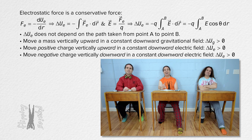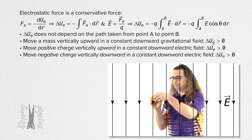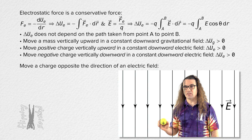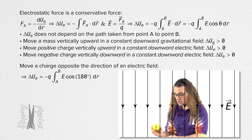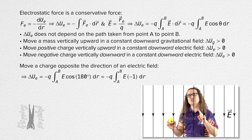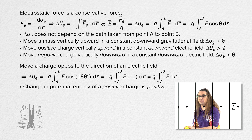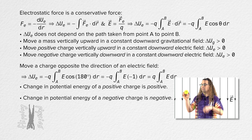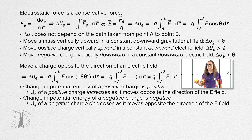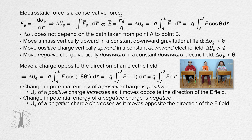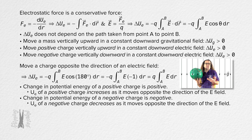I want to point out the negative and the dot product in the equation. As I move the charge in a direction opposite the direction of the electric field, the direction of the displacement and the direction of the electric field are opposite. Therefore, the angle between those two directions is 180 degrees. The cosine of 180 degrees is negative one, which makes the change in potential energy of a positive charge positive, and the change in potential energy of a negative charge negative. The electric potential energy of a positive charge increases as it moves opposite the direction of the electric field, and the electric potential energy of a negative charge decreases as it moves opposite the direction of the electric field.